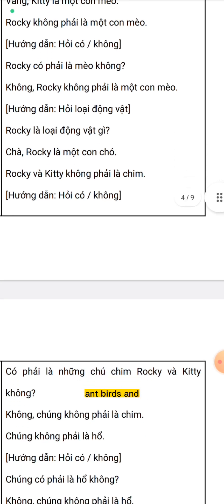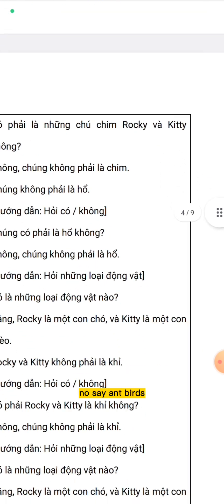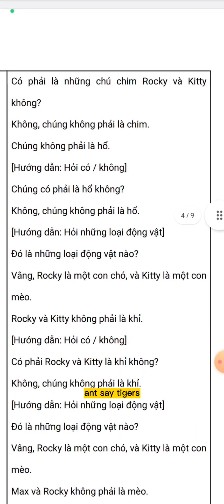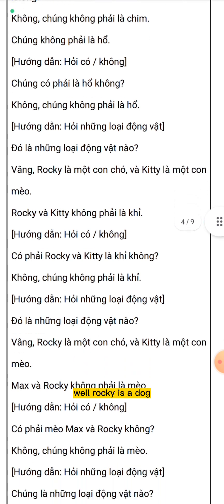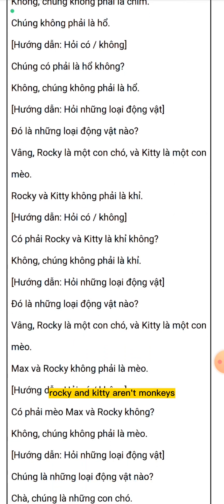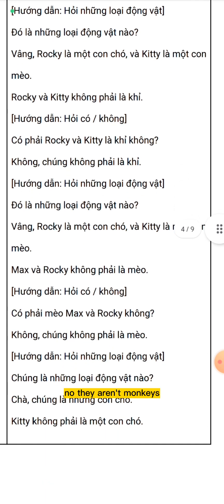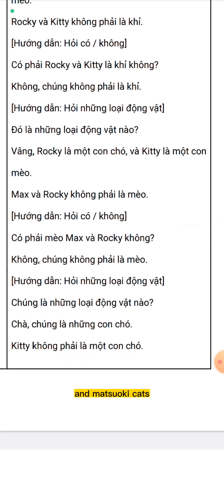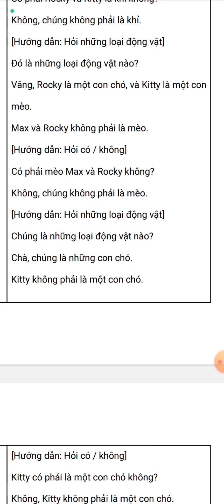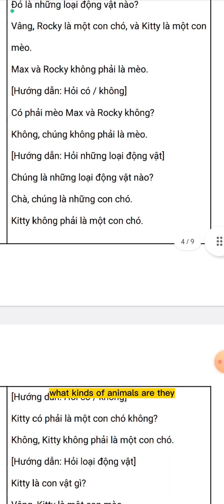Rocky and Kitty aren't birds. Are Rocky and Kitty birds? No, they aren't birds. They aren't tigers. Are they tigers? No, they aren't tigers. What kind of animal are they? Well, Rocky is a dog and Kitty is a cat. Rocky and Kitty aren't monkeys. Are Rocky and Kitty monkeys? No, they aren't monkeys. What kind of animal are they? Well, Rocky is a dog and Kitty is a cat. Masaroki aren't cats. Are Masaroki cats? No, they aren't cats. What kind of animals are they? Well, they are dogs.